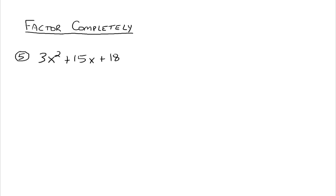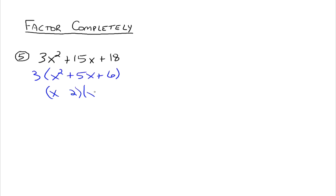Example 5: 3x squared plus 15x plus 18. The first thing to look for is the greatest common factor — yes, we have one. Factor out 3 to get 3 times the quantity x squared plus 5x plus 6. Inside the parentheses we have a trinomial of the form x squared plus bx plus c. We want factors of 6 that add up to 5, which is 2 and 3. Since the constant term is positive, both signs are plus, giving x plus 2 times x plus 3. The 3 goes along for the ride, so the full factored form is 3 times x plus 2 times x plus 3.